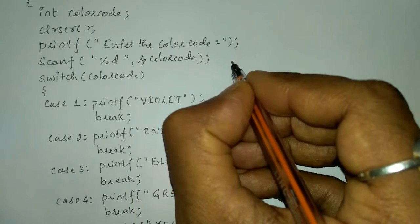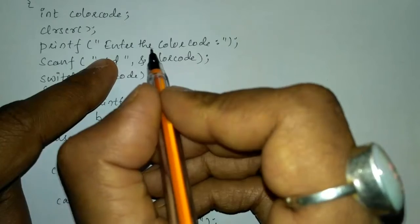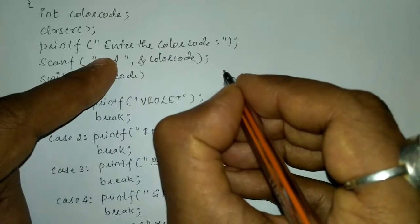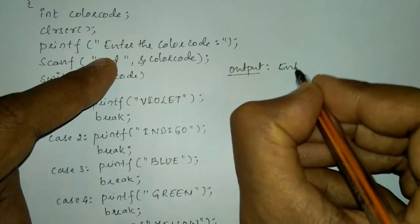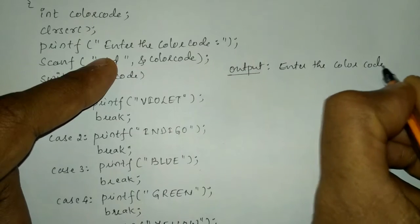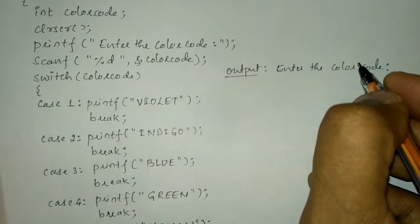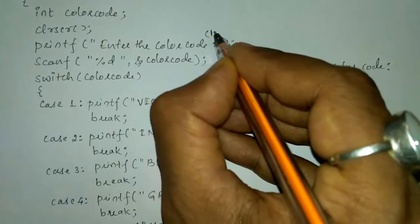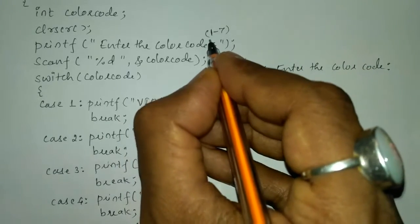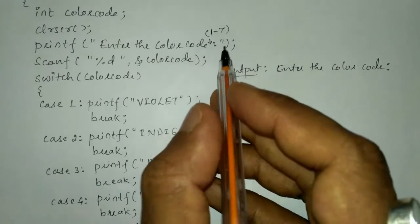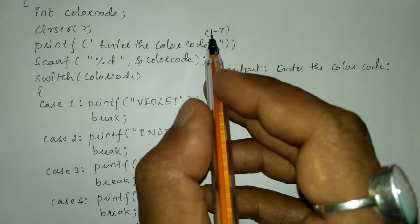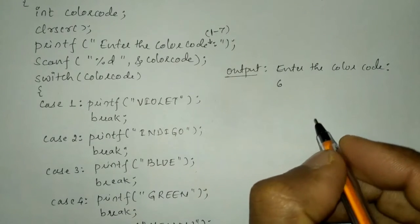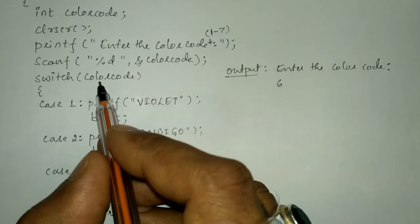To execute this program we compile and run it. Once we run the program it will display 'enter the color code'. I'll update the prompt to say 'enter the color code one to seven' so the user knows to press a number between one and seven. For example, I'm going to enter six. Six is stored in color code and passed into the switch statement.